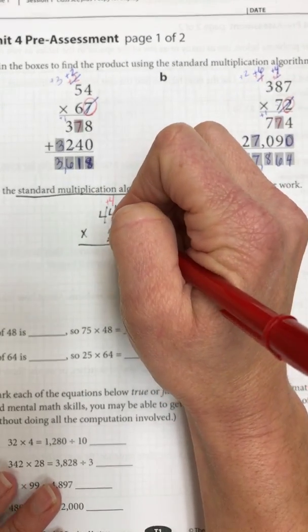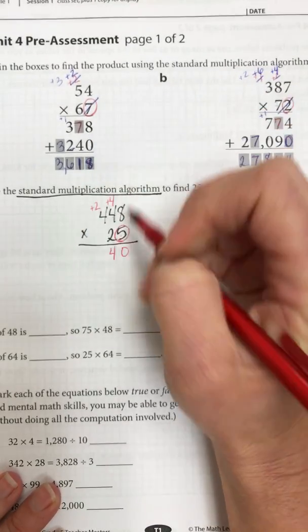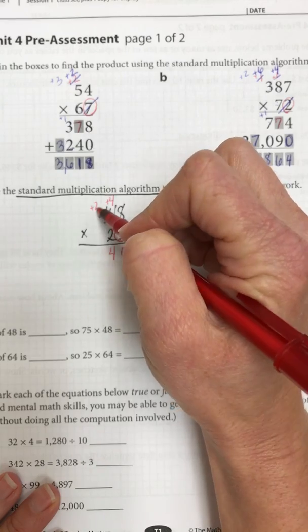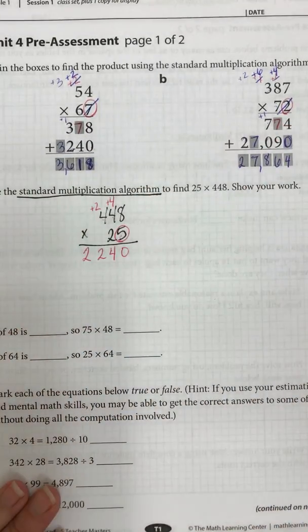5 times 4 is 20 plus 4 is 24. Add my 2. 5 times 4 is 20 again, plus 2. So I have 22. Okay, I'm done with the red.